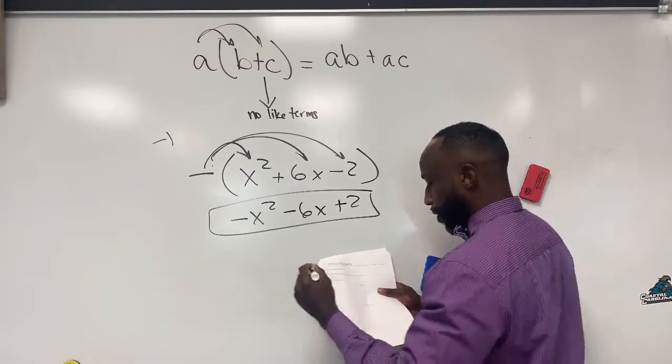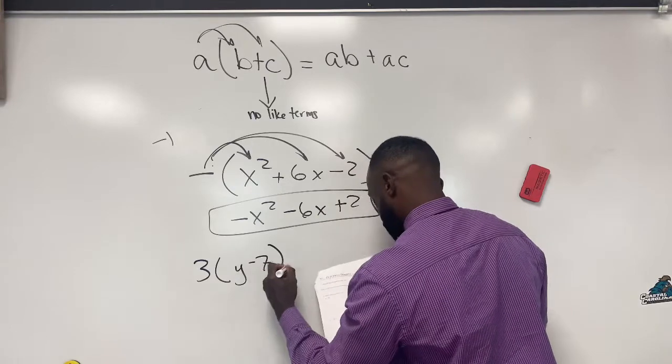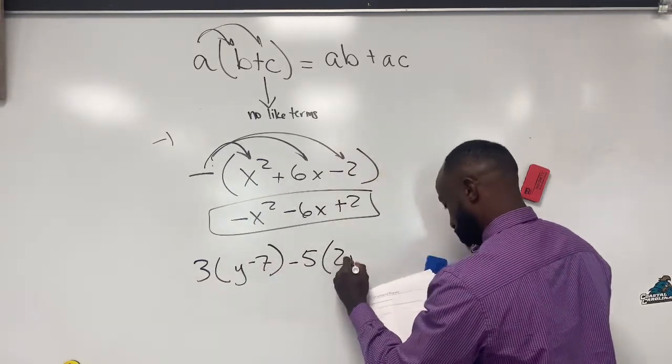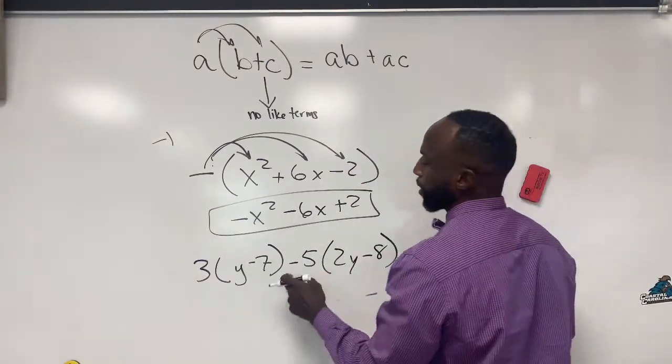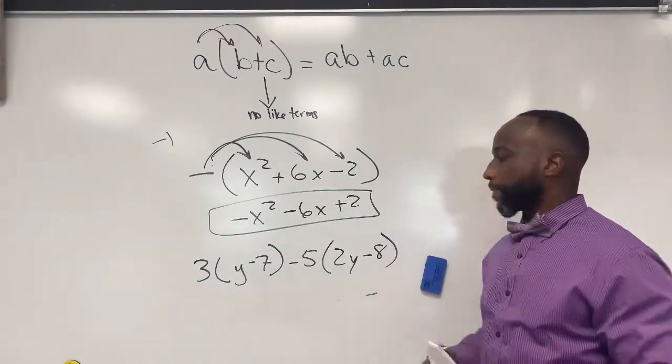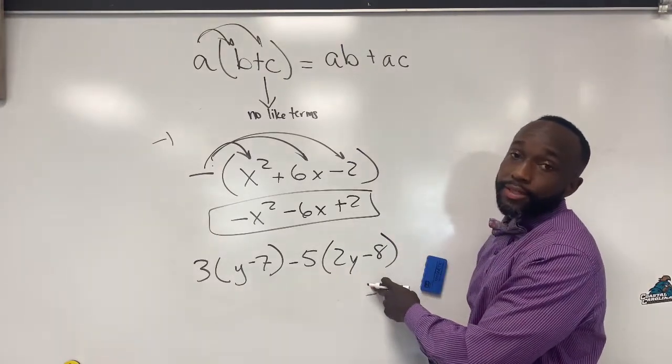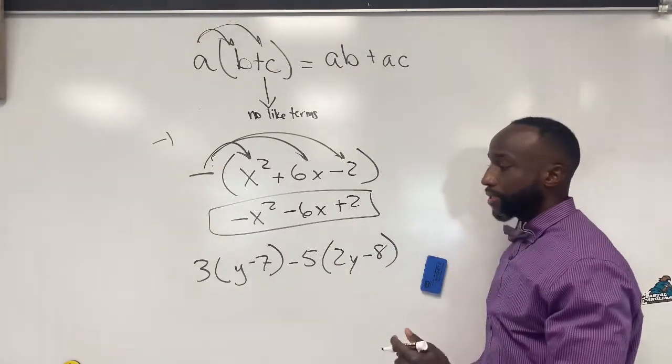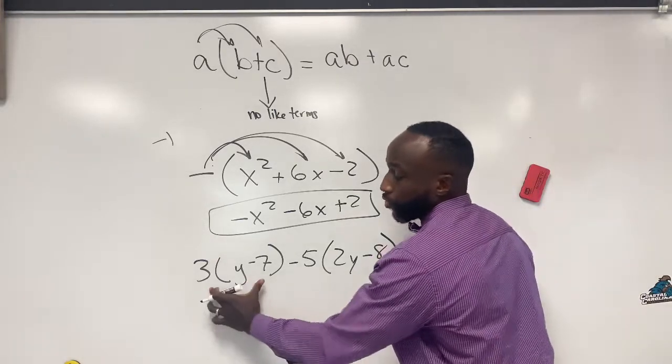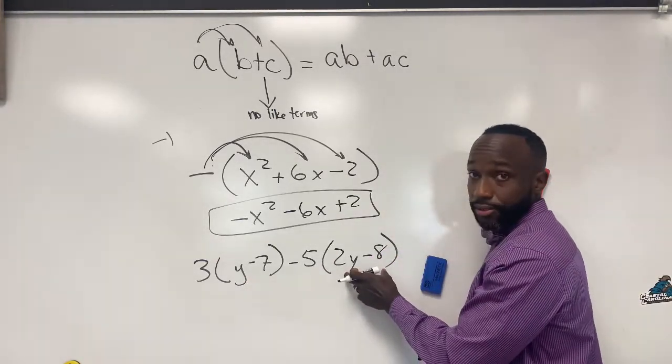What's the difference between this problem here? Three times the quantity y minus seven, minus five times the quantity two y minus eight. What's the difference between this problem and this problem? You have two different distributed property situations. So with that being said, you're going to distribute three into these parentheses and negative five into these parentheses.